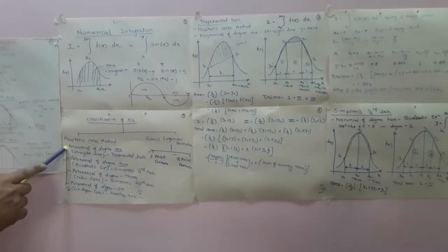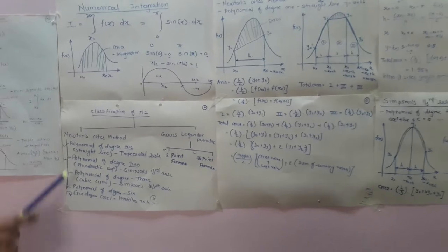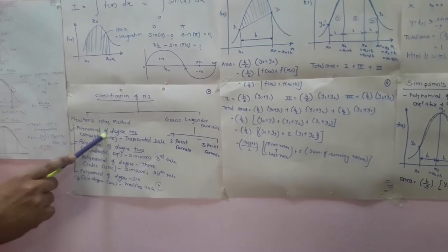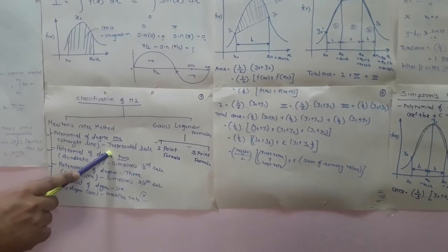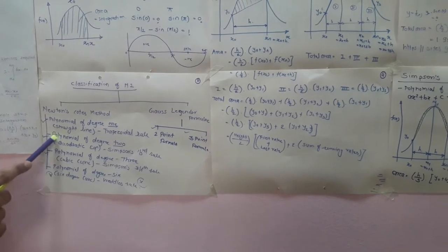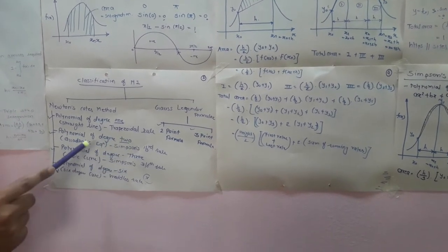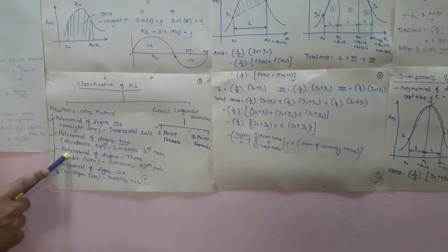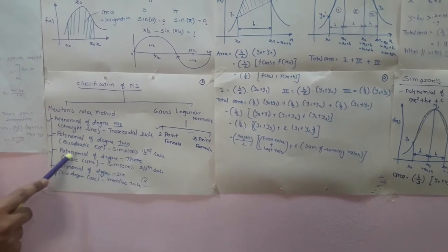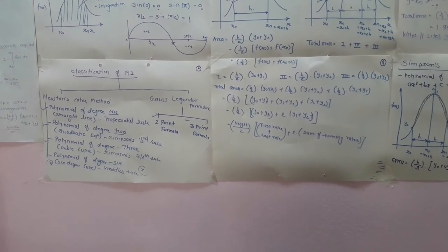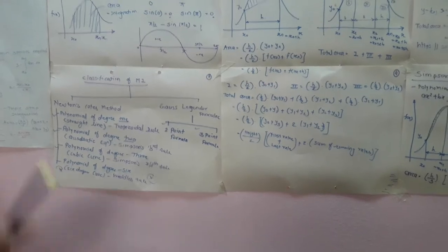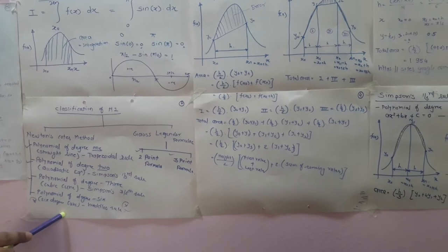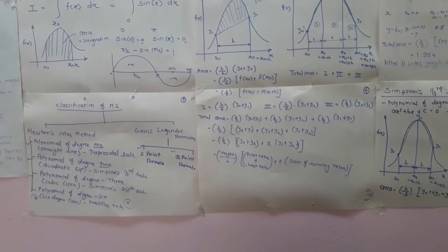In Newton's Cotes method, there are different sub-formulas available depending on the type of degree. If a polynomial of degree 1 — that is, a straight line — is used, it is called the Trapezoidal Rule. If we use a polynomial of degree 2, which is a quadratic equation, it is called Simpson's One-Third method. If we use a polynomial of degree 3, a cubic equation, it is evaluated using Simpson's 3/8 Rule. If we use a polynomial of degree 6, it is evaluated using Weddle's Rule.